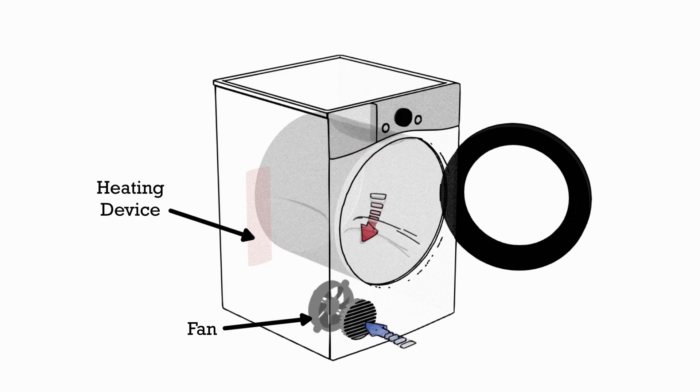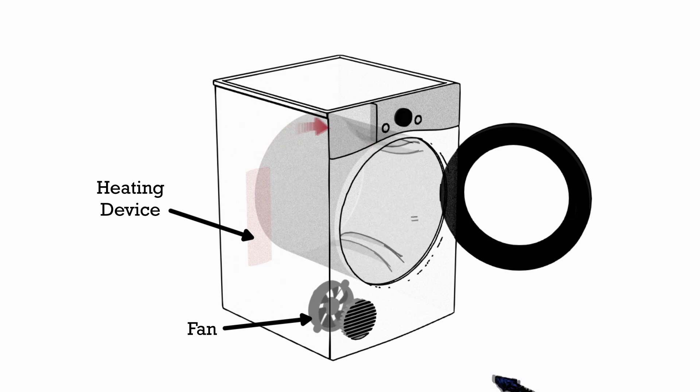This air passes over a heating device. Either a flame for gas powered dryers, a heating element or a heat pump. We will discuss the differences in heating methods later. Once the air enters the drum, it follows a spiral pathway inside the dryer passing over the clothes.